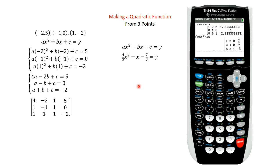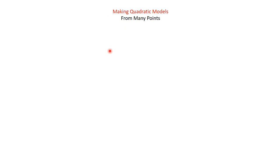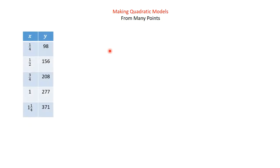We plug those values into the equation: y = (4/3)x² − x − 7/3. That's our quadratic function from three points. Now, if we have many points — typically five or six — we're going to do it a different way: regression.